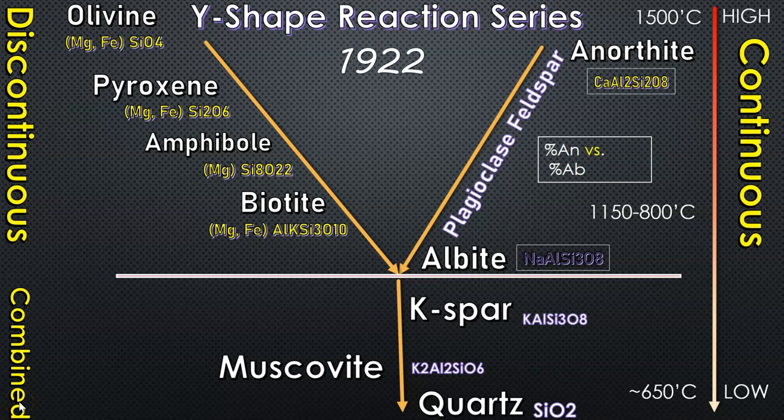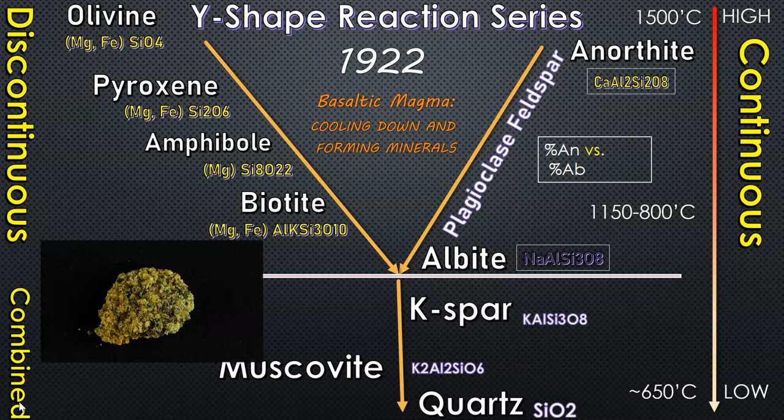The Bowen's reaction series is this Y-shaped reaction series looking at basaltic magma and how it cools. When it cools down, you have the formation of different minerals at different temperatures. There are two branches in the hotter range of the magma: discontinuous and continuous. On the left, we have olivine, which is the basic mineral that's first formed from the cooling magma at 1400 degrees.